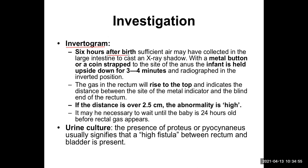Six hours after birth, sufficient air may have collected in the large intestine to cast an X-ray shadow. With a metal button or coin strapped to the site of the anus, the infant is held upside down for three to four minutes, and then an X-ray is taken — this is known as an invertogram. We cannot do it immediately; the baby needs to swallow air so it collects in the large intestine.